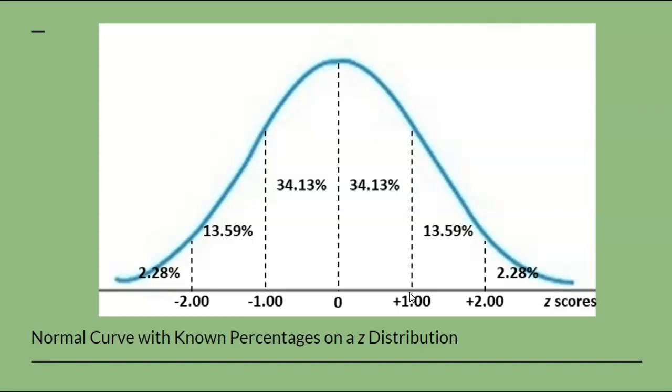However, extreme scores like those beyond two standard deviations in the tail of the graph occur approximately 4% of the time. These known percentages that correspond to specific z-scores will be important in interpreting results.